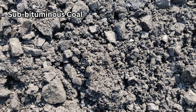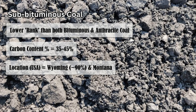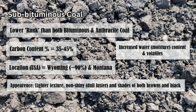Our next type of coal is sub-bituminous coal. Based on the name, it is lower in carbon percentage, around 35 to 45 percent. It's mined and found in certain areas of the states, including Wyoming and Montana — mostly Wyoming. This coal has a different appearance to both bituminous and anthracite. It has a non-shiny luster and much more moisture and water content.